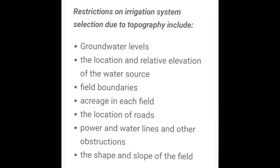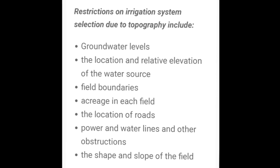Next हमारे पास restrictions on irrigation system selection due to topography हैं। First: ground water level check करोगे। The location and relative elevation of the water sources, field boundaries across each field, the location of road, power and water lines, other obstructions, and the shape and slope of the field।